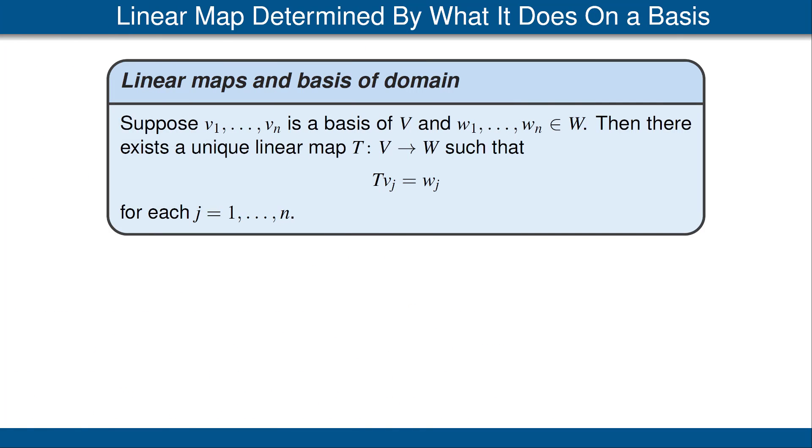Our next result is an easy but very useful theorem. It says the following: Suppose we have a basis v_1 up to v_n of V, and any vectors w_1 up to w_n of W. Notice we have the same number of v's as w's. The conclusion is there's a unique linear map T from V to W such that T(v_j) is equal to w_j for each j.